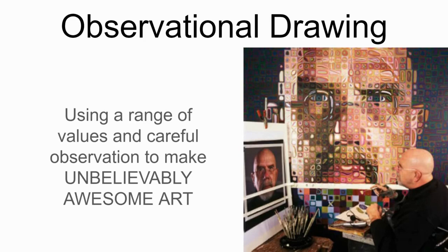Welcome to art class. Today we are talking about observational drawing, and in this unit we are going to be building those observational skills — which is just looking at stuff, looking real careful and noticing a lot. We're also going to try to use a range of value, remembering that value is the lightness or darkness of a color or tone, and we're going to carefully pay attention to detail using an artistic technique called an artist's grid.